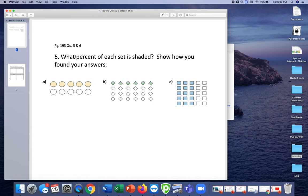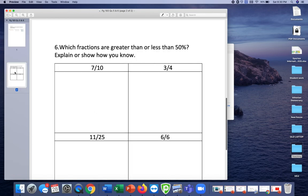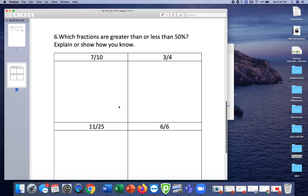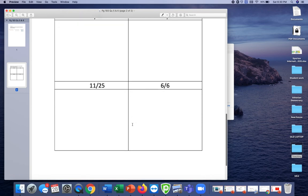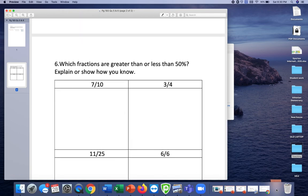So you need to write what percent of each set is shaded. So you might need to write this as a fraction first, maybe find equivalent fractions and then show your work. Show me how you found that. And then this is what number six is. So tell me if the fraction is greater than or less than 50% and then explain your work, show here how you know.